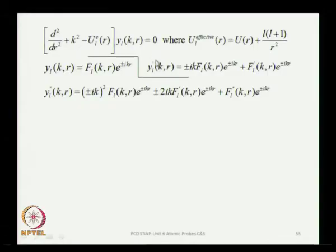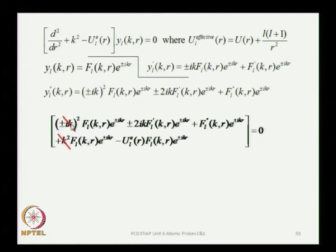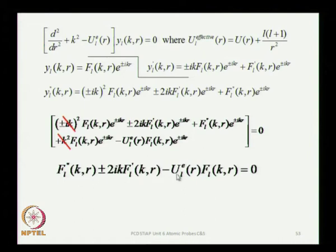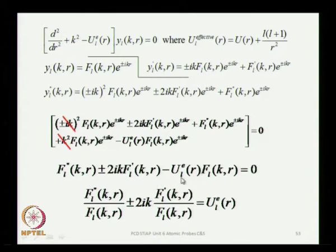Substituting into the differential equation, we find that F must satisfy a differential equation involving all these terms. Notice that the ±ik squared term and the k² term cancel, leaving only three terms in a bracket that add up to zero. This tells us about the ratio of F'' to F: dividing each term by F, we have F''/F in the first term and F'/F multiplied by ±2ik in the second, with u moved to the right-hand side.